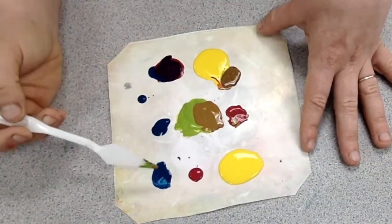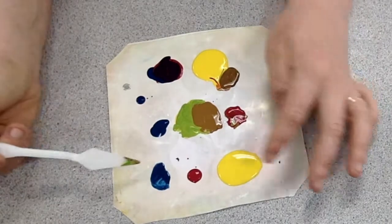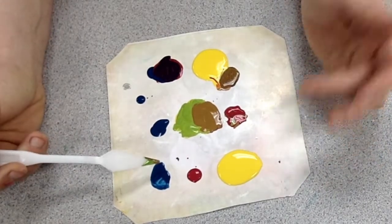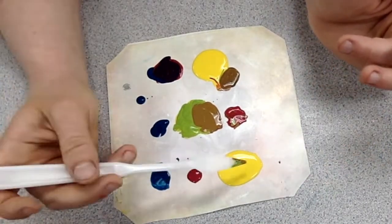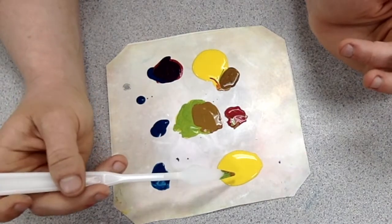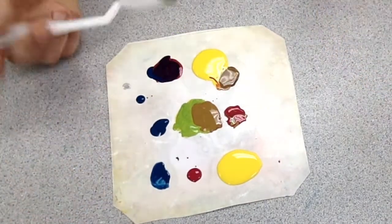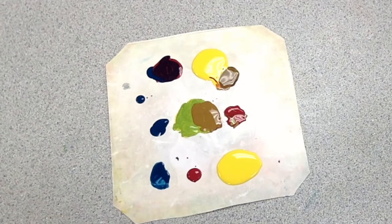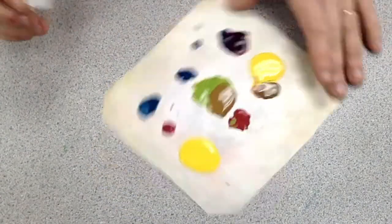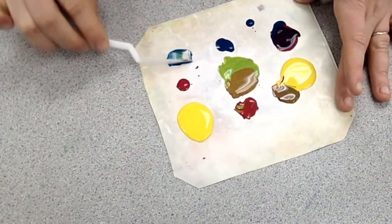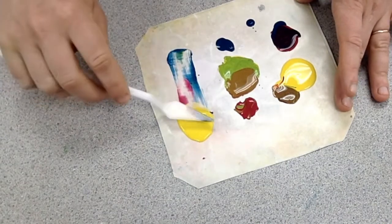One mistake that students make is, theoretically if you have one dot turquoise, which I happen to stick my paper in, one dot magenta, and then four or five dots worth of yellow, you should be able to slide all of this together and get brown. But we're going to find out if what I say is true.